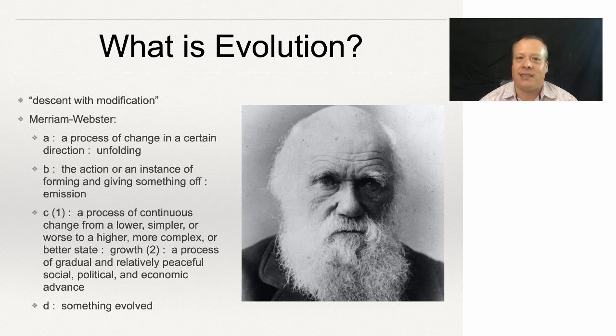And what is evolution? Let's start with a definition there first. So this is a picture of, of course, the illustrious Charles Darwin, and he described evolution as descent with modification. Merriam-Webster describes it as a process of change in a certain direction, the action or an instance of forming and giving something off, or a process of continuous change from a lower, simpler, or worse to a higher, more complex or better state process of gradual and relatively peaceful, social, political and economic advance, and something evolved, right?